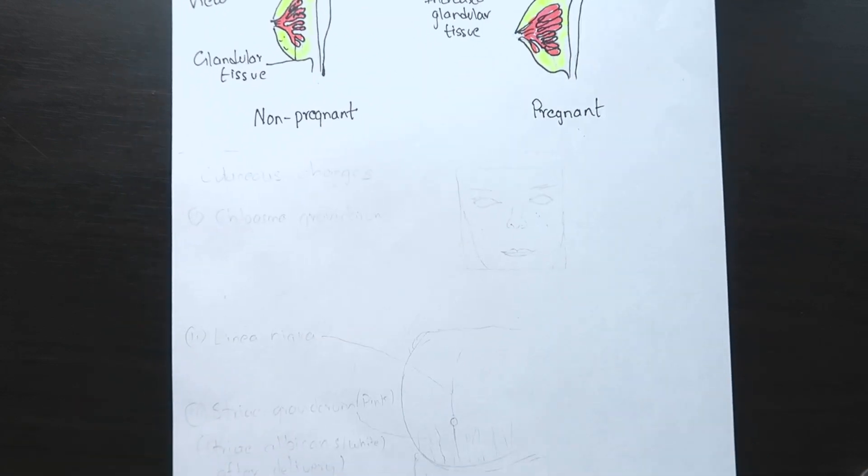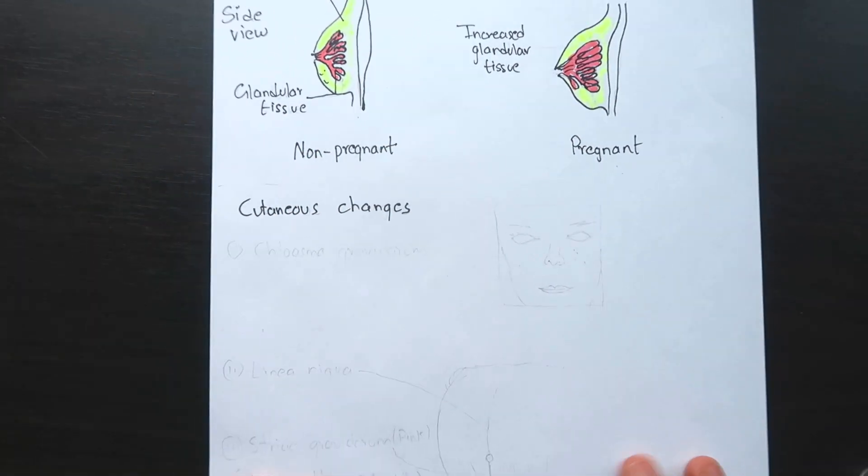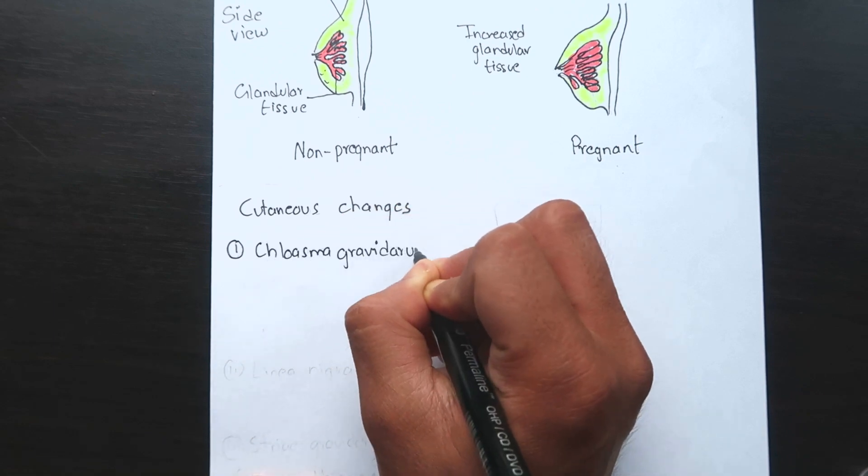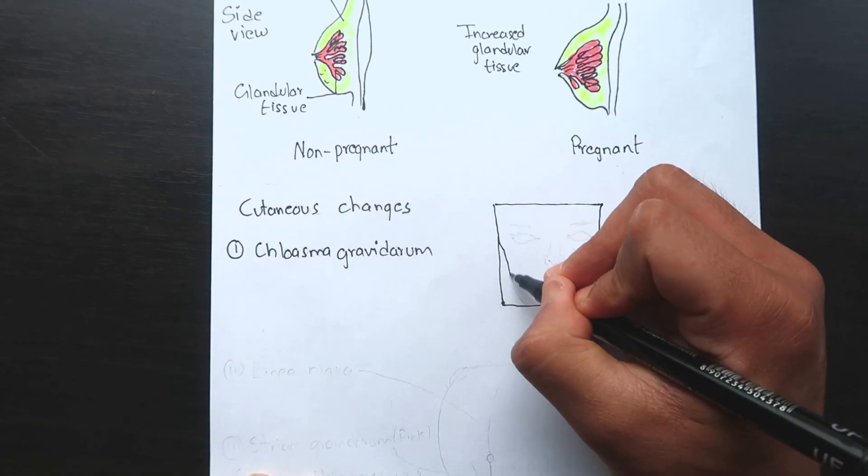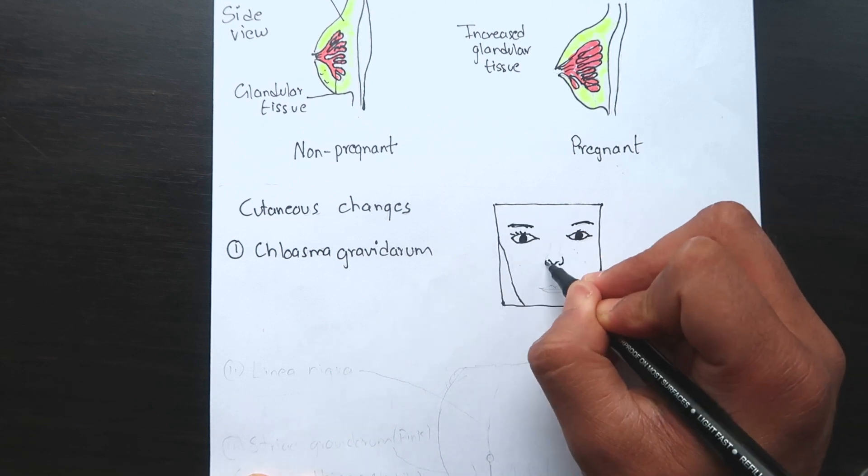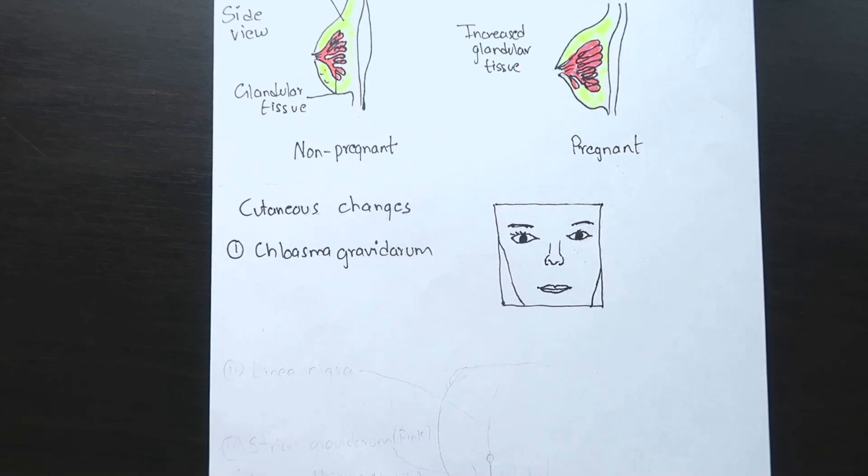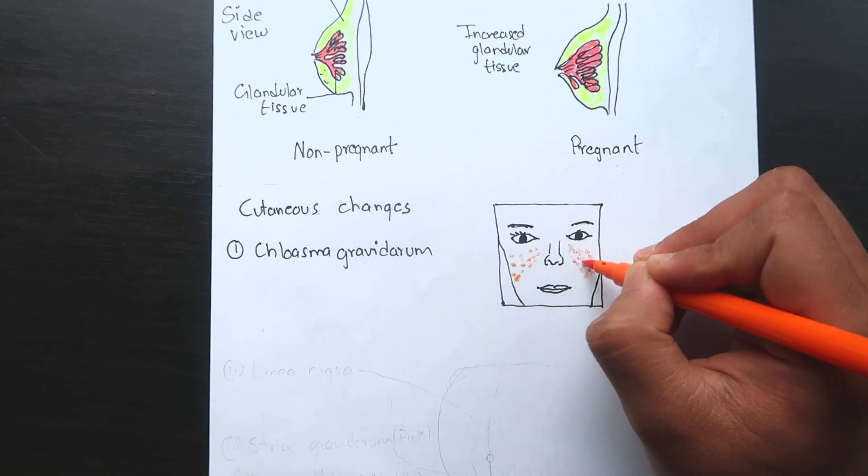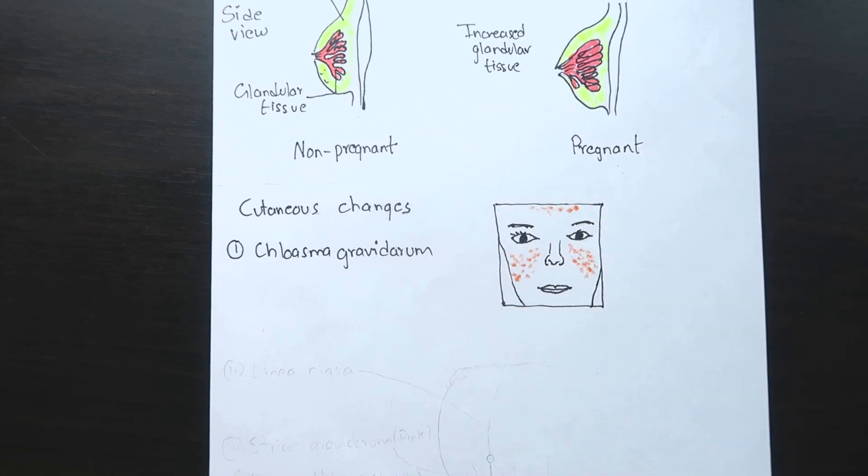Now on to the cutaneous changes during pregnancy. Chloasma gravidarum is an extreme form of pigmentation around the cheek, forehead and around the eyes. It may be patchy or diffuse and disappears spontaneously after delivery. It is also known as pregnancy mask.